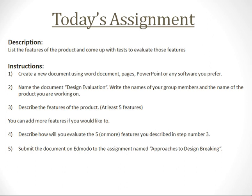For the assignment, I want you to list the features of a product and come up with tests to evaluate those features. Create a new document, name it 'Design Evaluation,' write your group members' names and the product name, then describe the features of the product. List at least five features — think carefully, ask your parents, colleagues, or anyone who can help. For example, a smart home product might have voice recognition or automated locks.